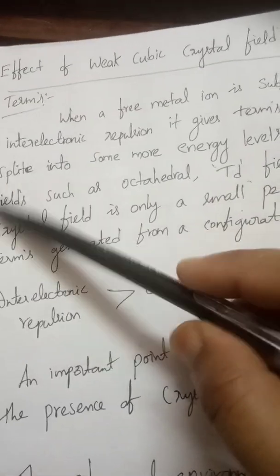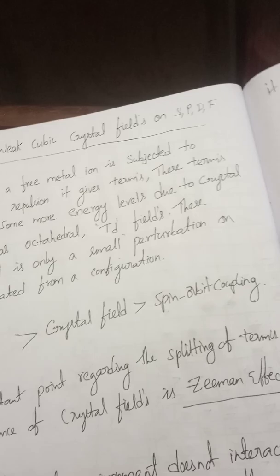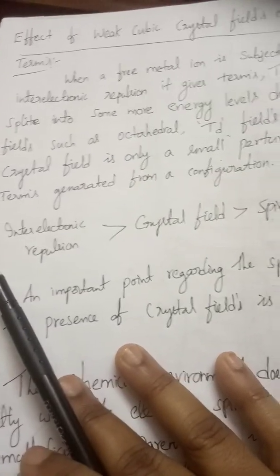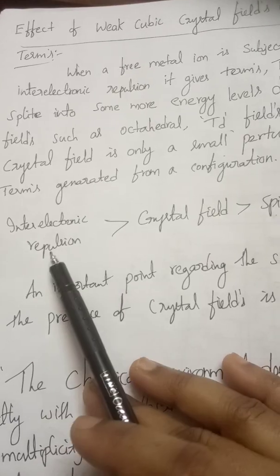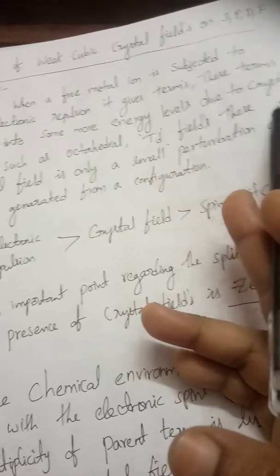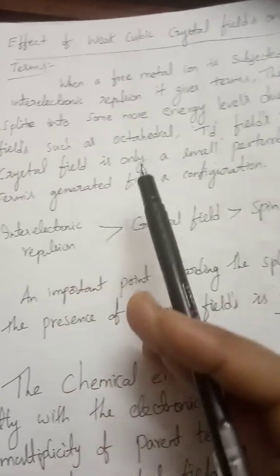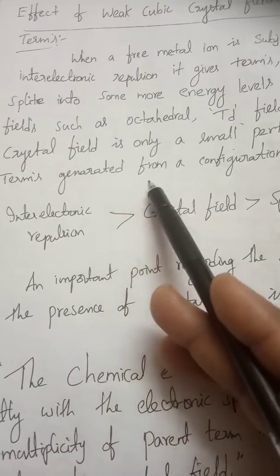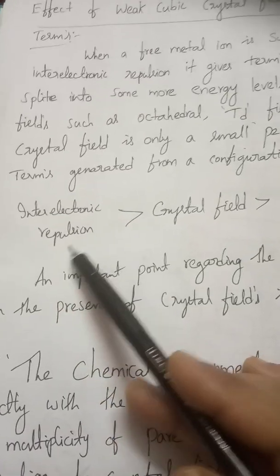We already know what are S, P, D, and F orbitals, but here we discuss about the terms. Whenever a free metal ion is subjected to inter-electronic repulsion, it gives terms. These terms undergo splitting into some energy levels due to the crystal field, such as octahedral and tetrahedral. These crystal fields are only small perturbation terms generated from the configuration, so inter-electronic repulsions are more compared with the crystal field.